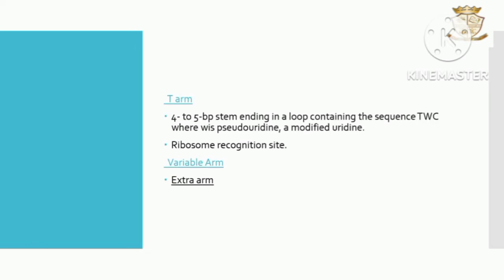The T arm is a four to five base pair stem ending in a loop that contains the sequence T-psi-C, where psi is pseudouridine. This region is believed to be involved in the binding of tRNA with the ribosome during translation, so it is called the ribosome recognition site. The variable arm is also called the extra arm.